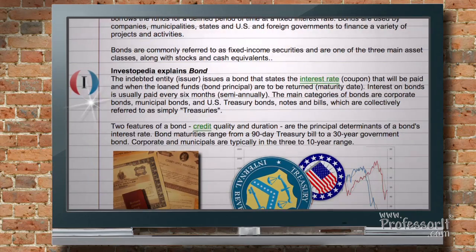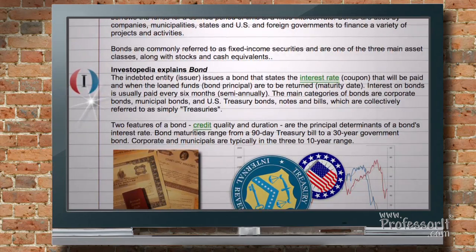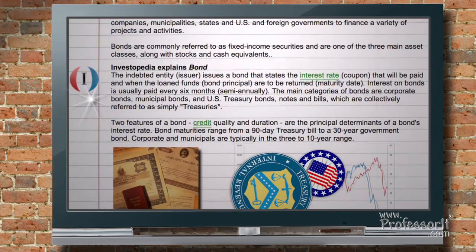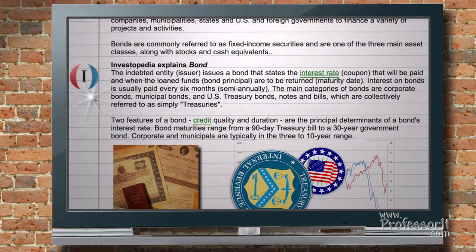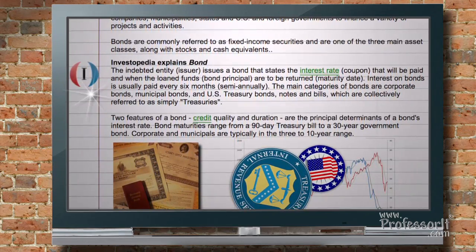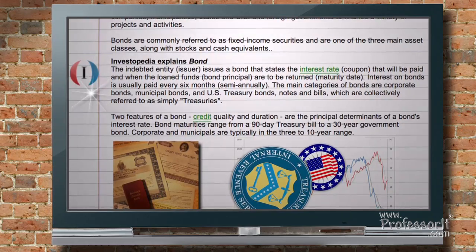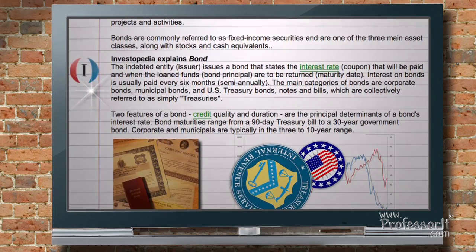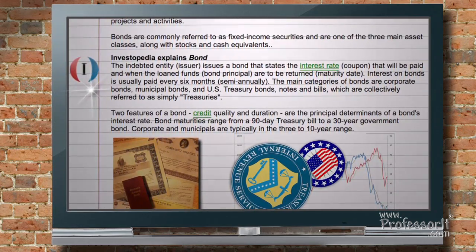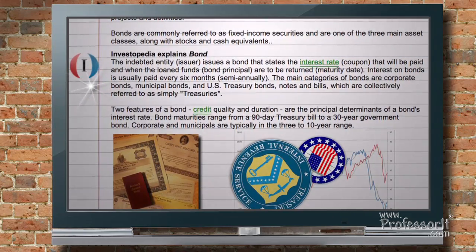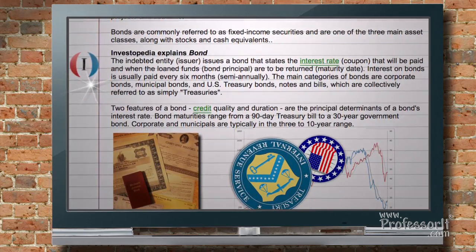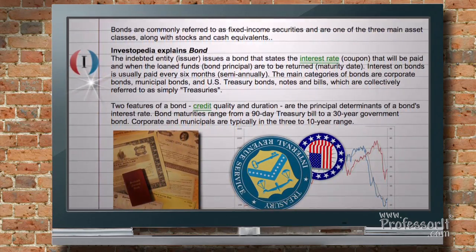Two features of a bond — credit quality and duration — are the principal determinants of a bond's interest rate. Bond maturities range from a 90-day treasury bill to a 30-year government bond. Corporate and municipals are typically in the 3 to 10-year range.